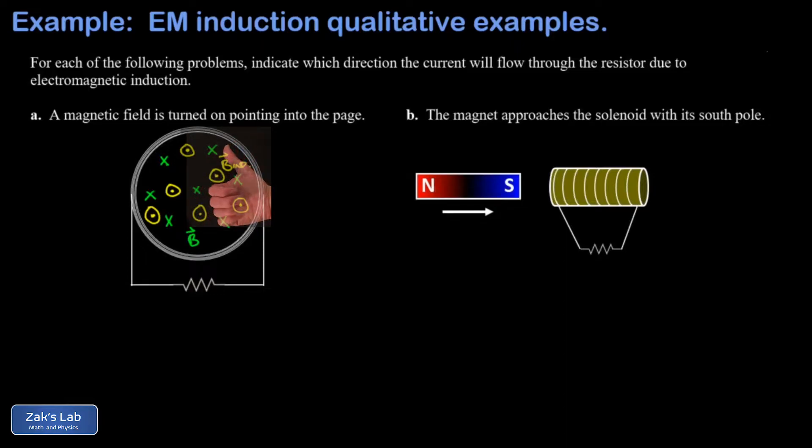So it looks like a counterclockwise current through this loop produces those induced outward magnetic field lines that are trying to reduce the change in flux. Well, counterclockwise current through the loop means downward current on the left branch.